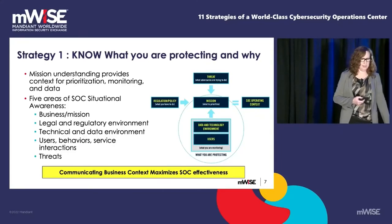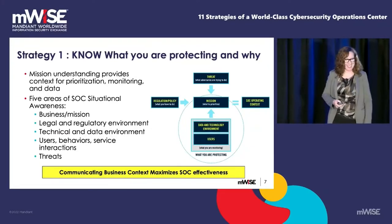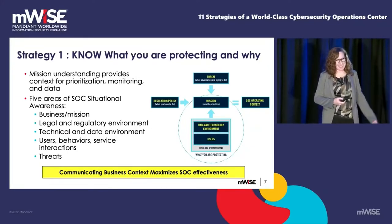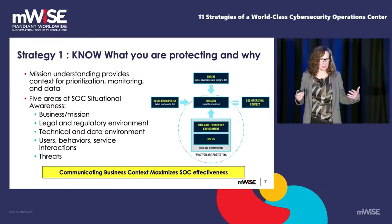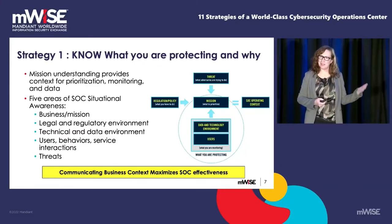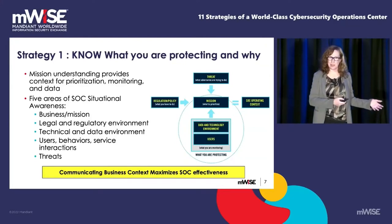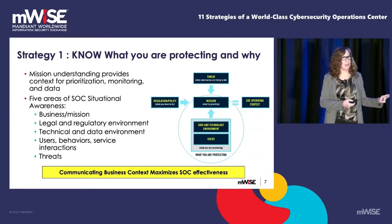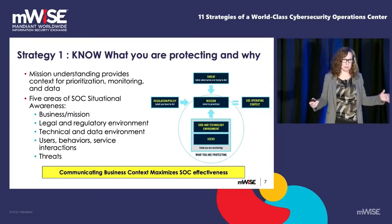There are five areas when it comes to knowing what you're protecting and why. The first is the technical and data environment. Back decades ago, that's what security operations focused on — sensors, where we're placing them, what do our networks look like, partitioning, those kinds of things. Today we're still focused on that, but it's a lot more complex. We have to be choosy about how we configure things, otherwise you're going to be overwhelmed with data.